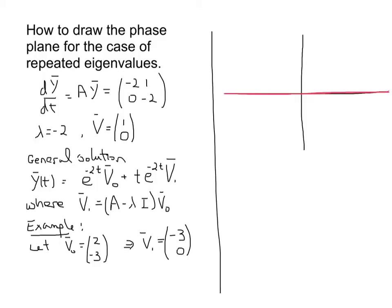But I chose as an example, I said suppose we're at the point (2, -3). So suppose we're sitting here at this point. The question is how do we approach this? When we look at the solution, it would look like this: y(t) = e^(-2t) [(2, -3) + t(-3, 0)].